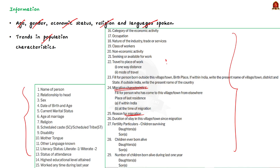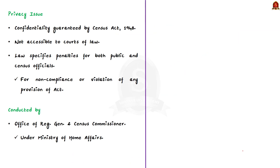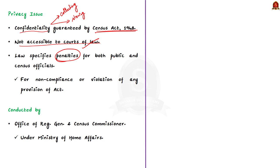Census is a holistic process of collecting all data required for policy making or for planning any government programs. You may ask whether this data will be misused. No — this is because of the confidentiality maintained in collecting and preserving the data. The information collected during the population census is so confidential that it is not even accessible to courts of law. This confidentiality is guaranteed by the Census Act 1948. The law specifies that penalties will be given to both public and census officials for non-compliance or violation of any provision of the Census Act 1948.